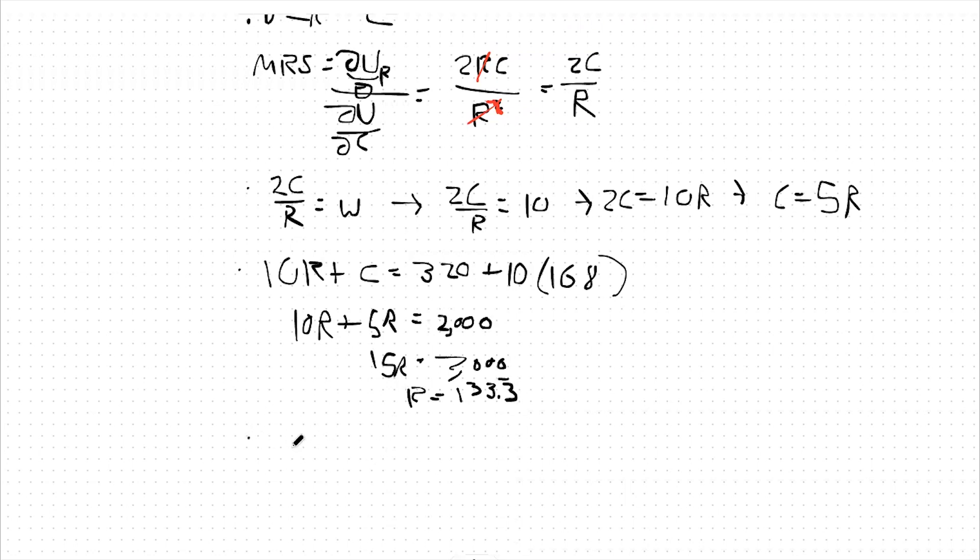From there we can also find our optimal amount of consumption. That's going to be C equals 5 times R. So R in this case would be 133.3 repeating. That's going to be 666.67.